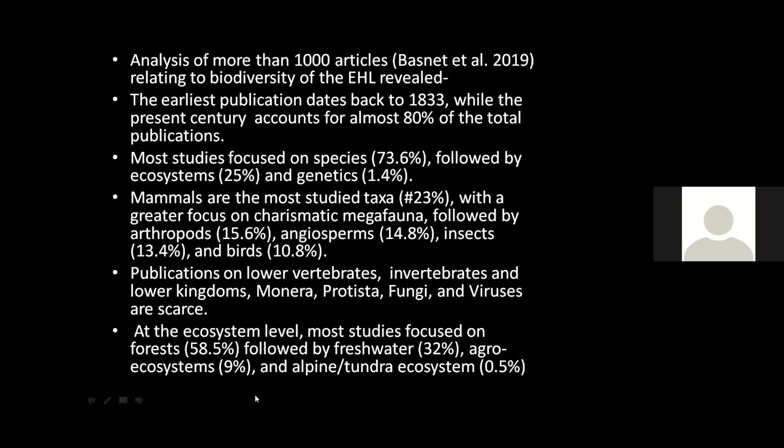The first publication from the eastern Himalaya dated back to 1883. As mountains gained importance in recent years, 80% of total publications on the eastern Himalaya are from the present century. Different types of research are being performed: species-oriented research, ecosystem-related research, and climate change-related research. Most studies focus on species-related topics, followed by ecosystem research, while genetics occupies a very negligible percentage.